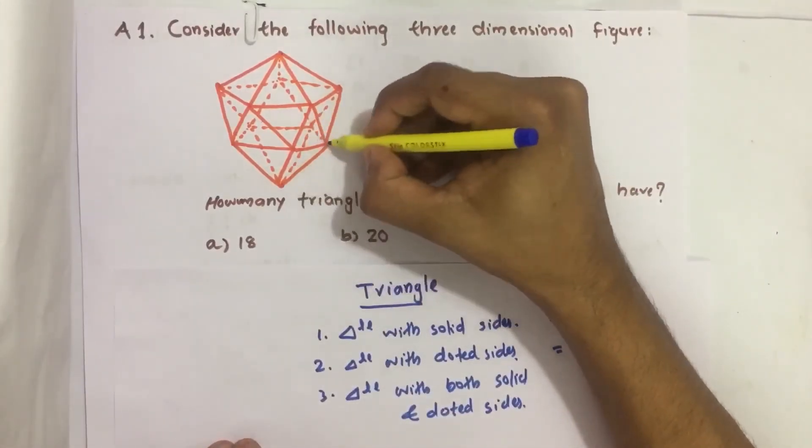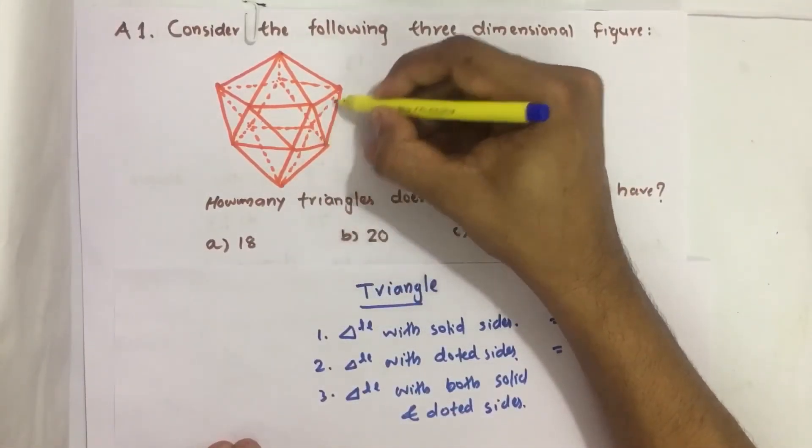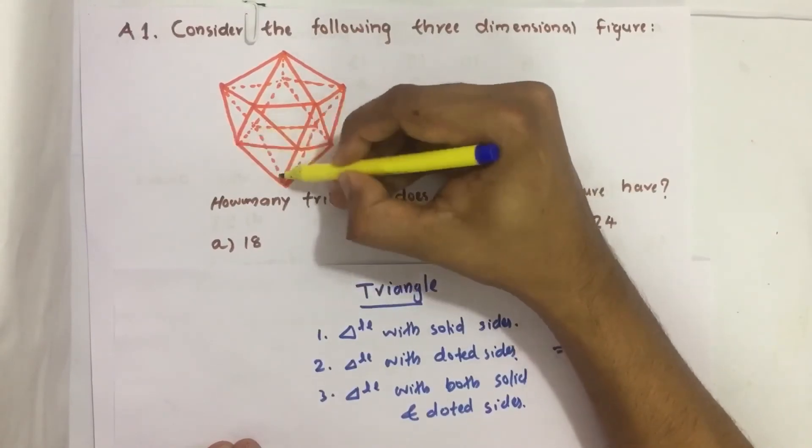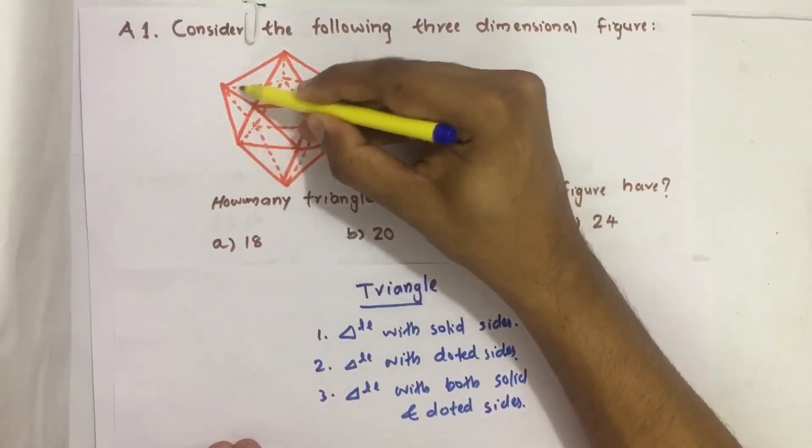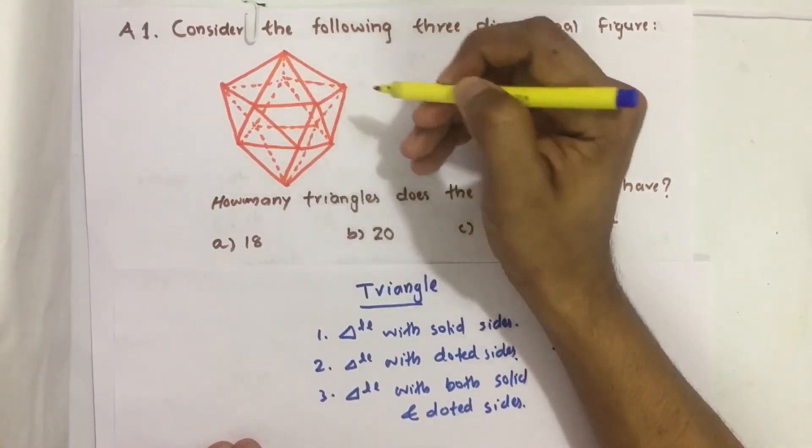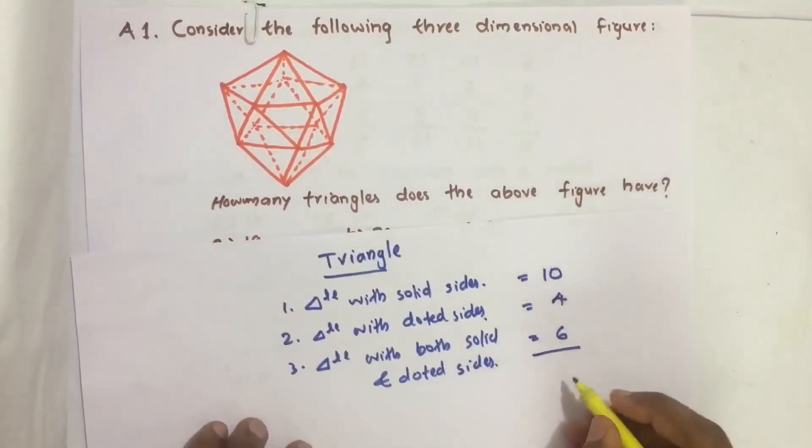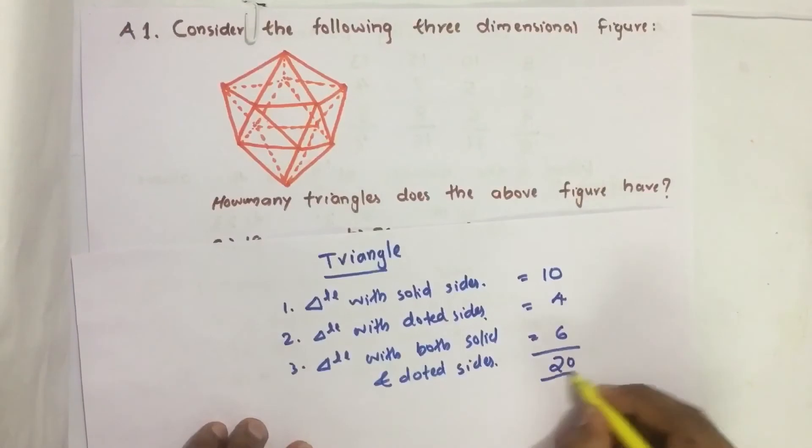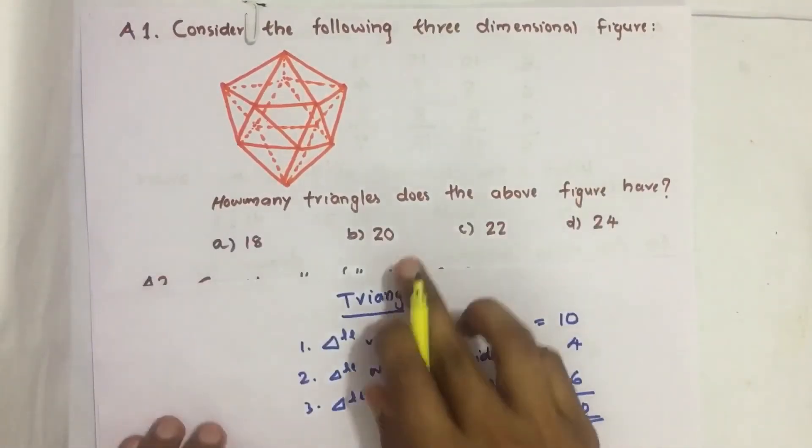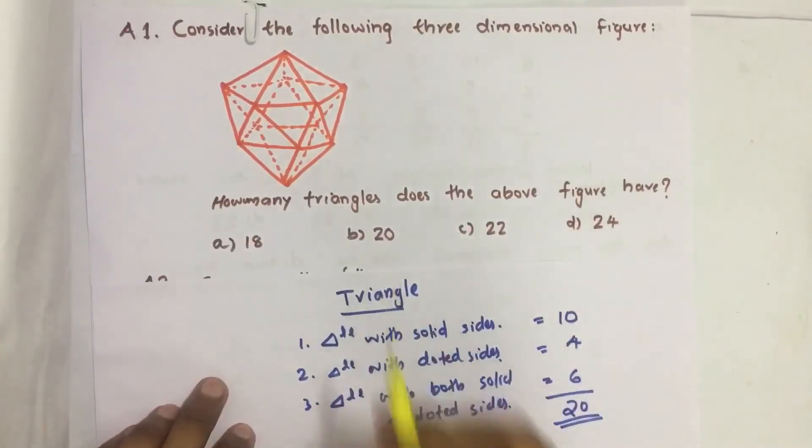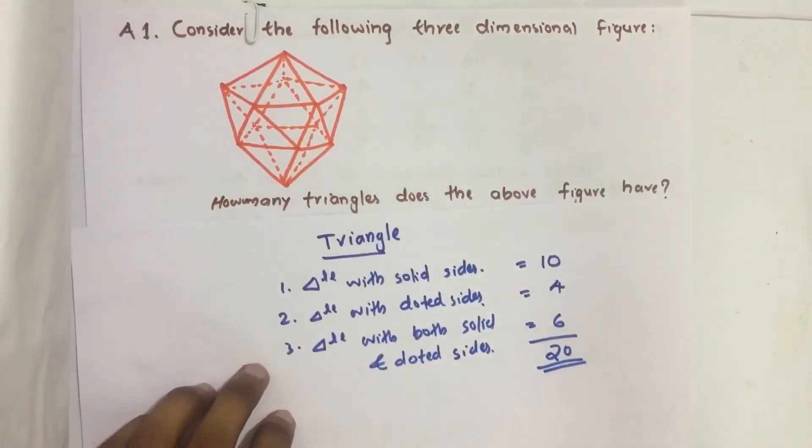So first one, this is 1, this is 2, this is 3, this is 4, 5, 6—total six such triangles are there. So we just count the total: we get 20. So how many triangles does the above figure have? 20. If you are not counting like this, you will also get it, but there is more chance to repeat